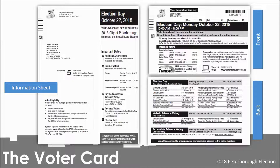In late September, voter information cards are mailed to every elector on the list of electors. Voter cards give information on where and when to vote, as well as how to vote online. Voter information cards can also be used for free transit to any voting location on Election Day.